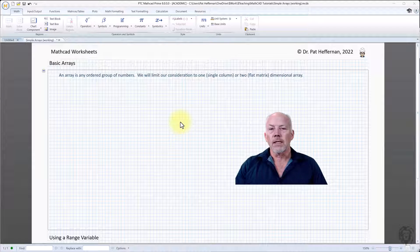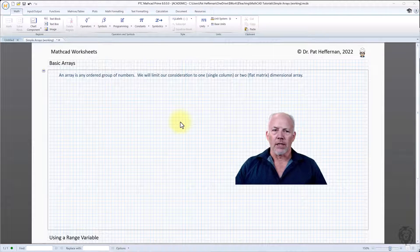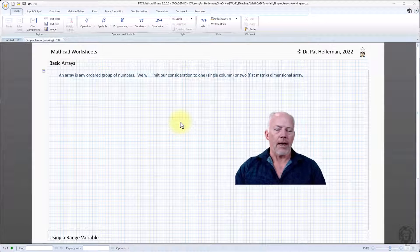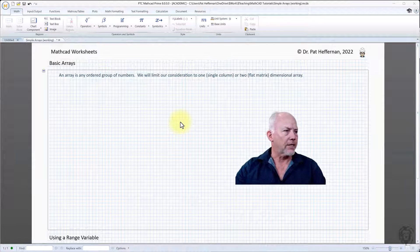So a basic array, and we're going to limit ourselves to considering one and two dimensional arrays, is really any set of numbers. We'll look at one dimensional column matrices or two dimensional, which would be your basic flat sheet two dimensional matrix.